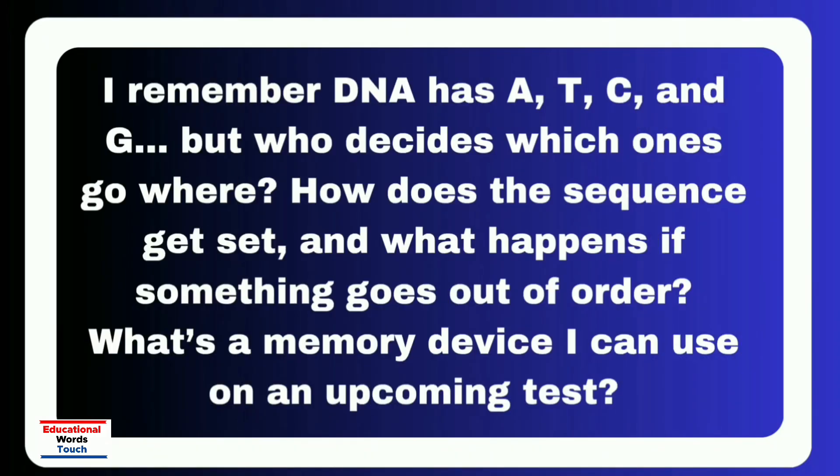In this video I will discuss a question: I know DNA has A, T, C and G, but who decides which ones go where? How does the sequence get set and what happens if something goes out of order? What's a memory device I can use on an upcoming test?